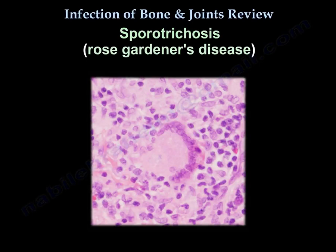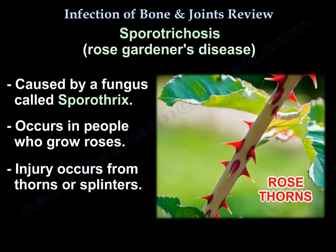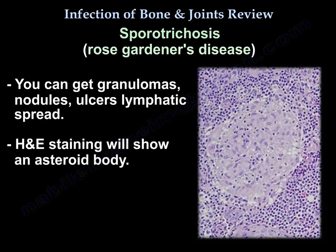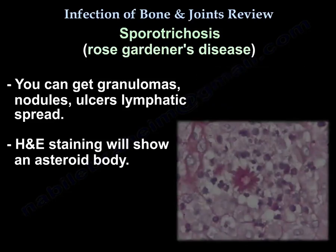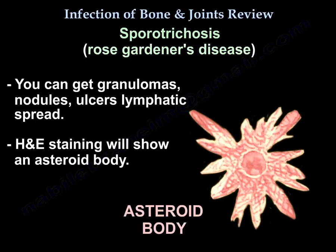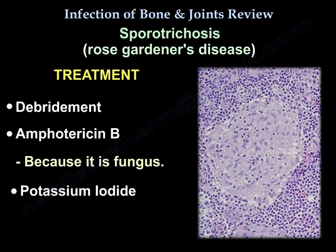Sporotrichosis is a fungus infection that happens in rose growers, with injury from thorns and splinters. It can cause granulomas, nodules, and ulcers with lymphatic spread. The H&E stain will show an asteroid body. Treatment is debridement, amphotericin B, and potassium iodide.